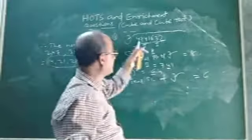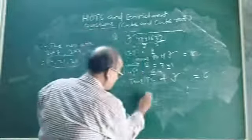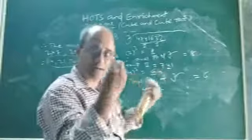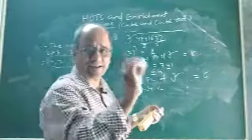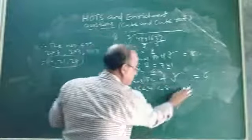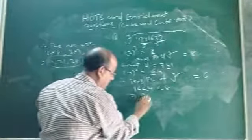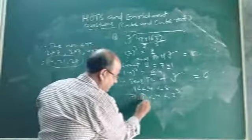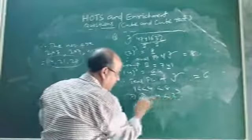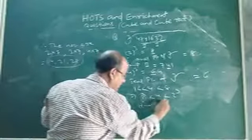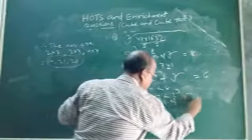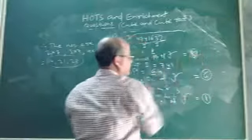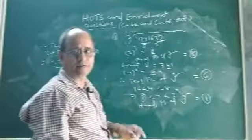Now, to get the hundreds digit, look at the third group, which is only 4. Now, 4 lies between which two nearest perfect cubes? It lies between 1 and 8, because 4 is less than 8 and greater than 1 — that is, 1³ < 4 < 2³. So definitely 1 will be the hundreds digit. The hundreds digit is 1, the tens digit is 6, and the ones digit is 8 — so the cube root is 168.